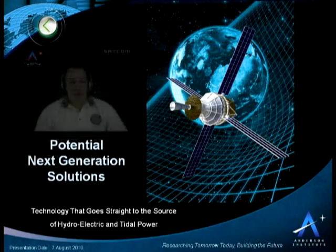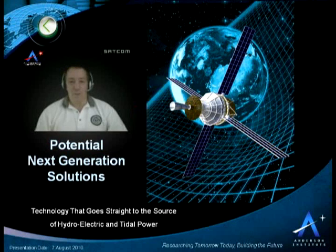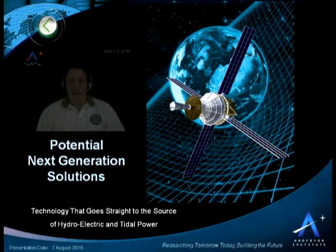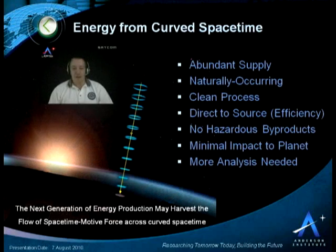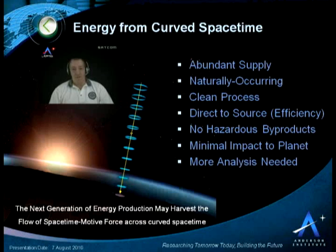One solution emerging in space-time physics is to go straight to the source — the same source that creates hydroelectric and tidal power. Essentially, what we're looking at is taking energy from curved space-time naturally occurring around the Earth. This may very well be the next generation of energy, coming from the harvesting of the flow of space-time motive force across curved space-time. It's abundant in supply, naturally occurring, and clean. It's highly efficient because we go direct to the source, there are no hazardous byproducts, and there is minimal impact to the planet, though more study is needed to understand the effect on our global ecosystem.